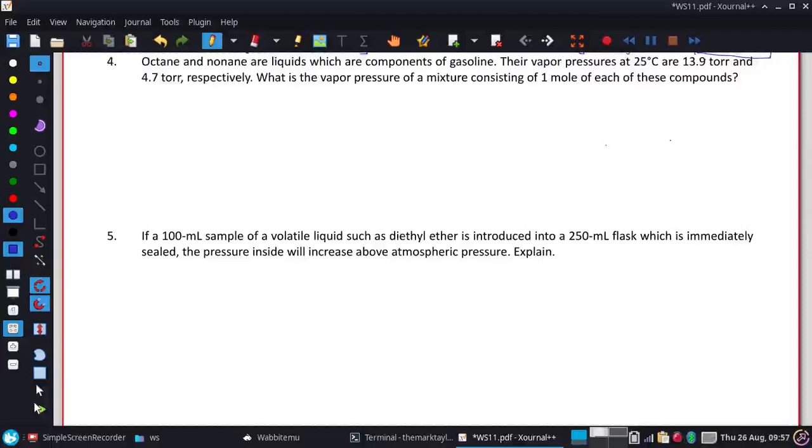Okay, number four. Octane and nonane are liquids which are components of gasoline. Their vapor pressures at 25 degrees Celsius are 13.9 torr and 4.7 torr respectively. So the 13.9 is for the octane, nonane is the 4.7. What is the vapor pressure of the mixture consisting of one mole of each of these compounds?